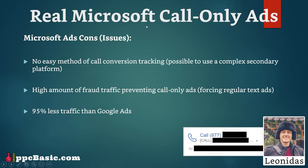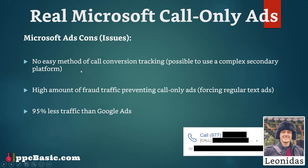Now for the cons. First, there is no easy method for call conversion tracking. Unlike Google Ads where you simply check a couple of boxes and plug in your phone number, Microsoft Ads has not implemented a proper call tracking system yet, and it doesn't appear to be in their pipeline according to community suggestions and requests. Even if you did want to set up call conversion tracking, you'd have to use a complex secondary platform outside of Microsoft Ads — and I won't cover that in this tutorial.